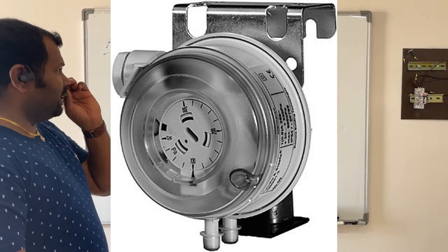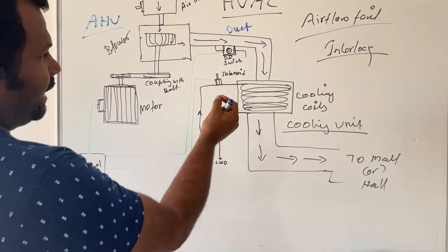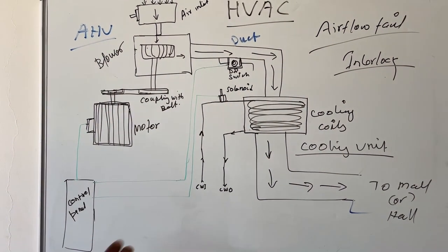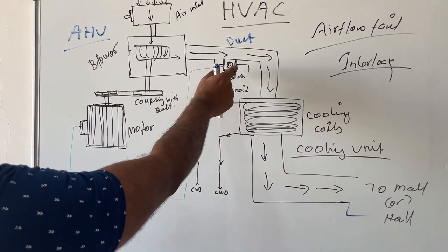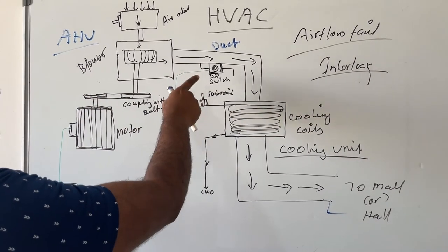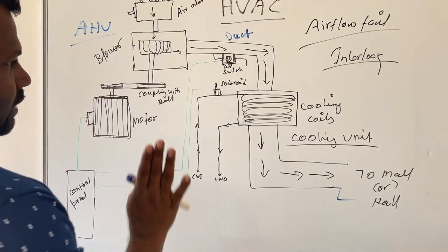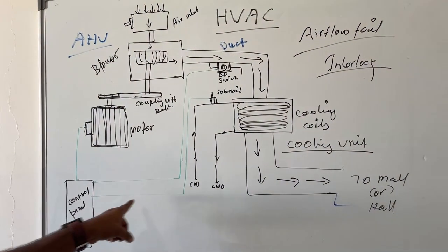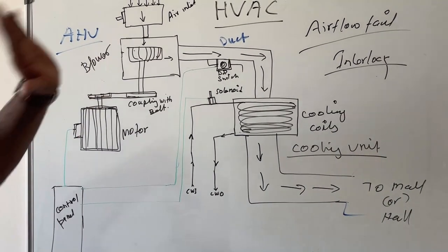What we do is install a differential pressure switch on the duct. This pressure switch is connected both electrically and through a small air inlet on the duct. A small air inlet is given to the DP switch, so that small air will pass through the micro switch which is inside the DP switch.